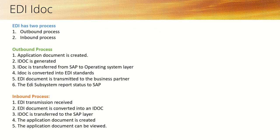EDI has two processes. The first is outbound — the outbound process takes place in the sender system. The second is inbound — the inbound process is done in the receiver system. In the outbound process, an application document is created such as a purchase order, then based on that an IDoc is generated, transferred to the operating system layer, converted to EDI standards, and the EDI document is transmitted to the business partner. The subsystem then reports the status back to SAP.